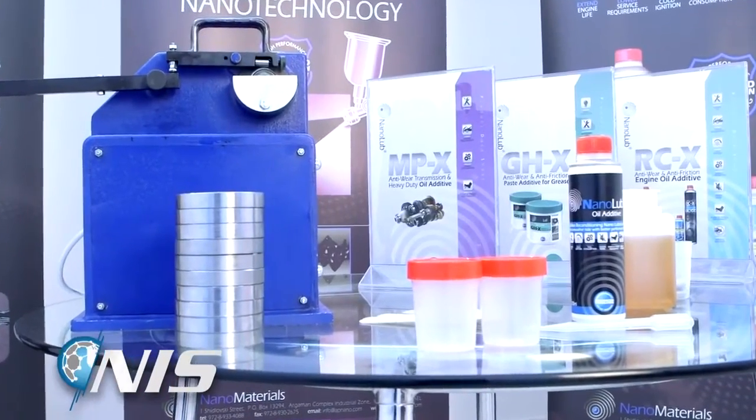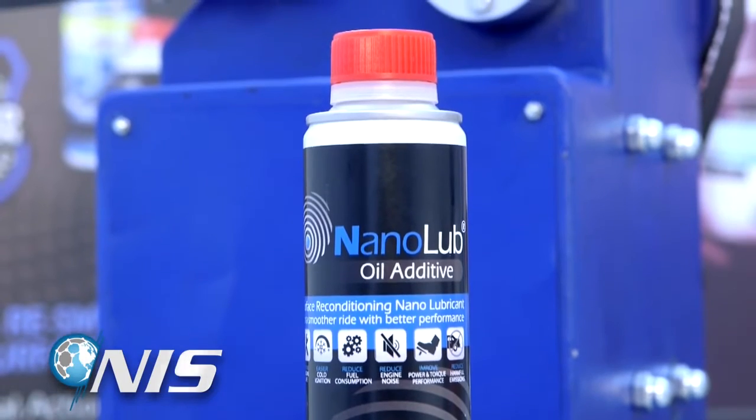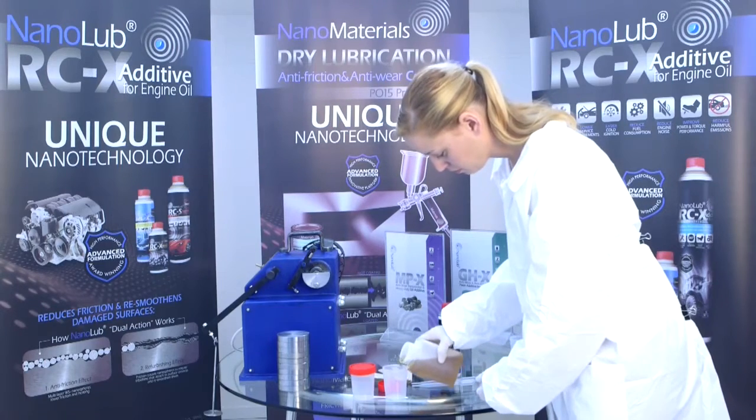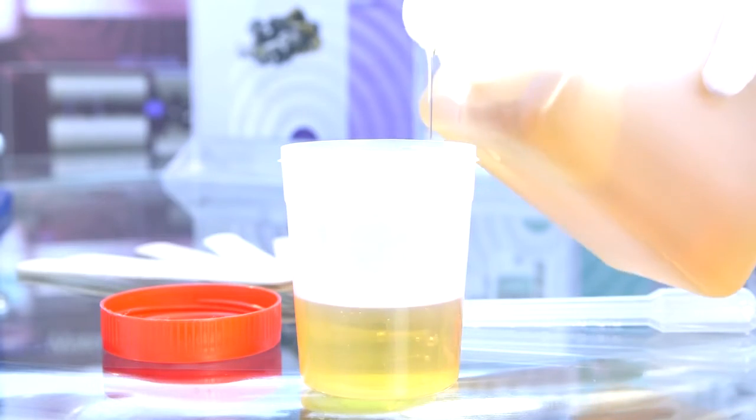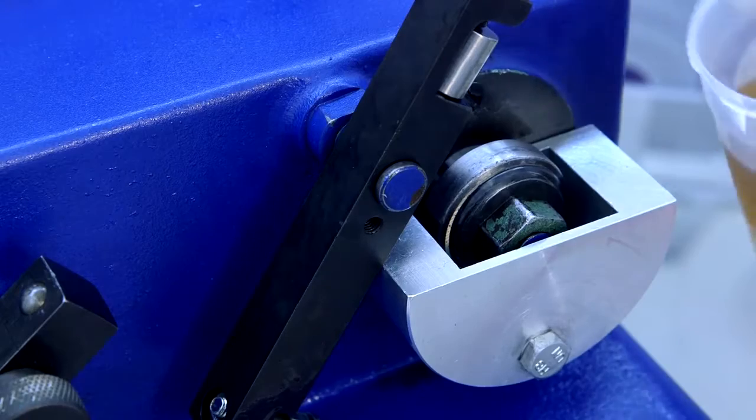The well-known and accurate Timken test will now show the significant advantages of using the NanoLube additive. In the first stage of the simulation, our operator takes conventional lubrication oil and fills the oil basin of the friction tester.